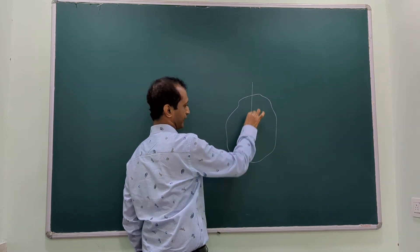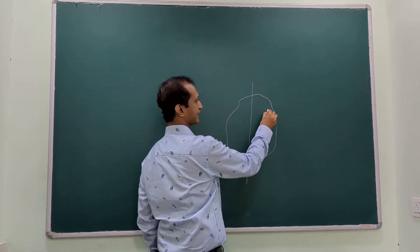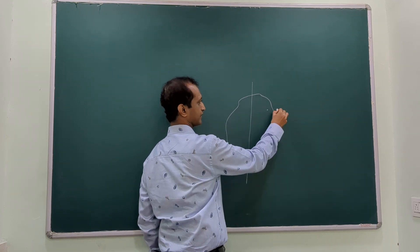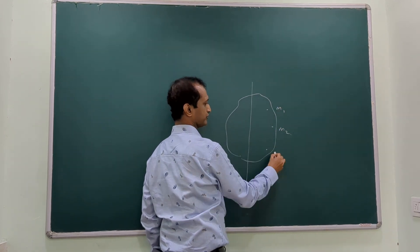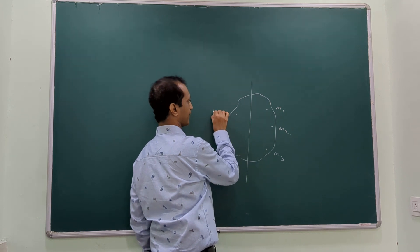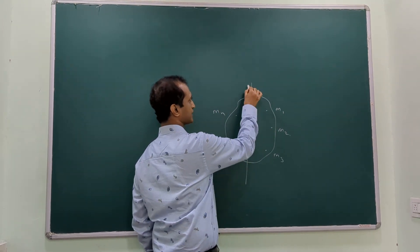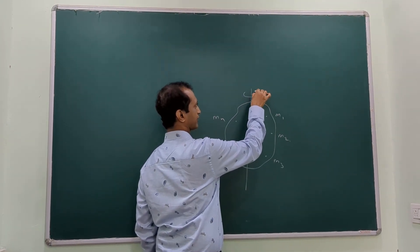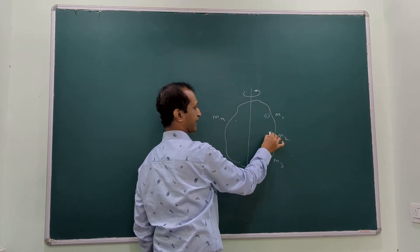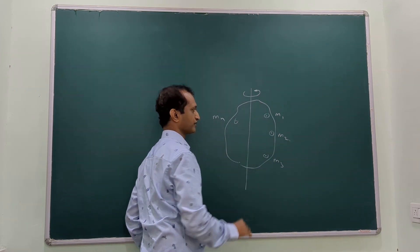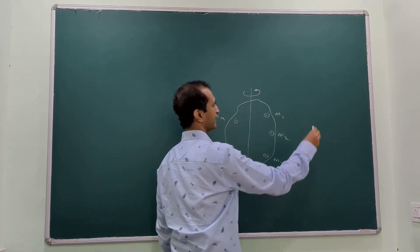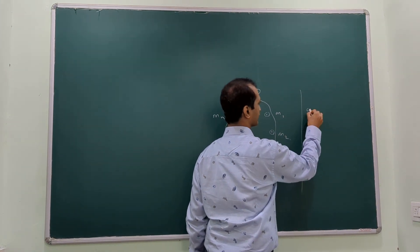Consider this to be an irregular body made up of different masses M1, M2, M3, up to Mn. When it is rotating about its axis, each particle, because it is on the same body, has the same angular velocity.